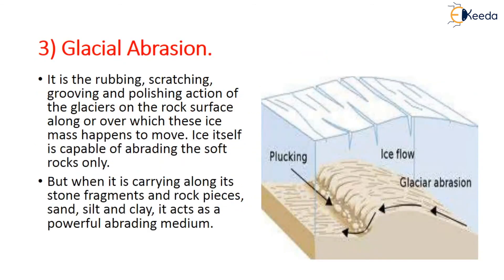Glacier abrasion involves rubbing, grooving, scratching, and polishing. After plucking leaves behind the rock surface, the glacier moves away. Abrasion is the rubbing, scratching, grooving, and polishing action of the glacier mainly on rock particles along or over the ice mass as it moves. Ice itself is capable of abrading soft rock only — it cannot abrade hard rocks.